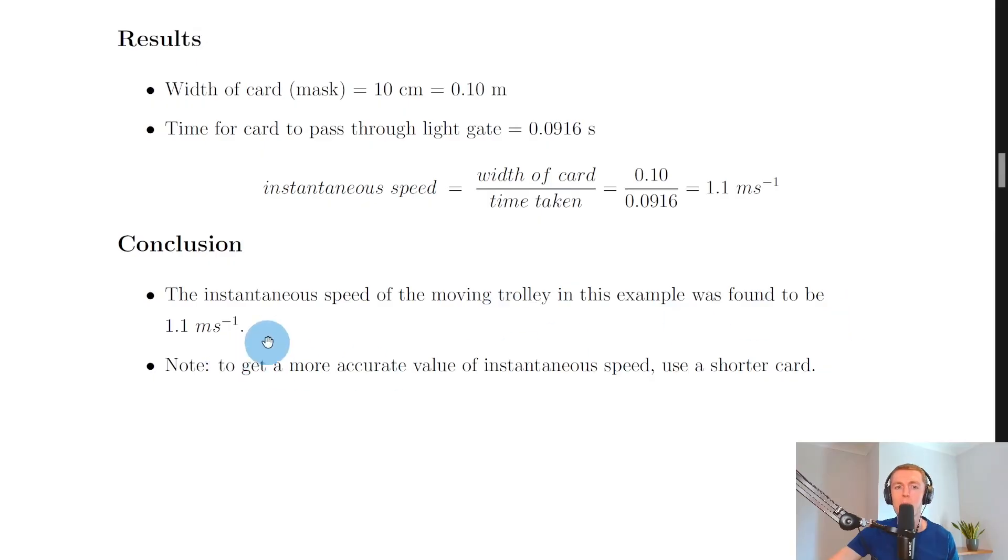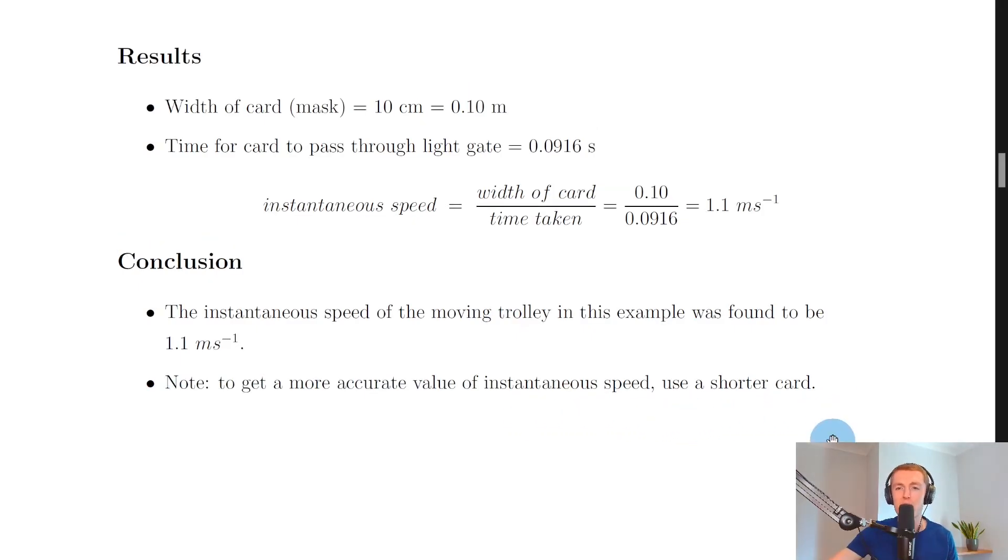Note: to get a more accurate value of instantaneous speed, we could use a shorter card. That's because if we were to use a shorter card in this setup, a shorter card will mean that the time taken for that shorter card to cut through the light gate will be smaller.